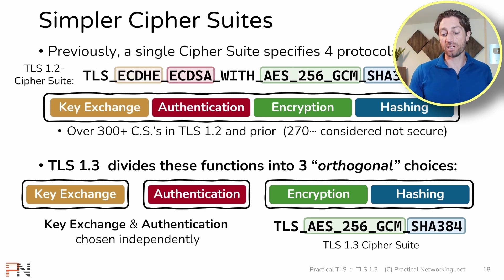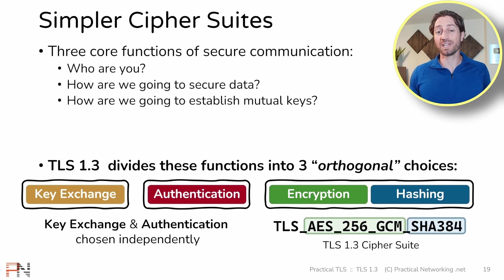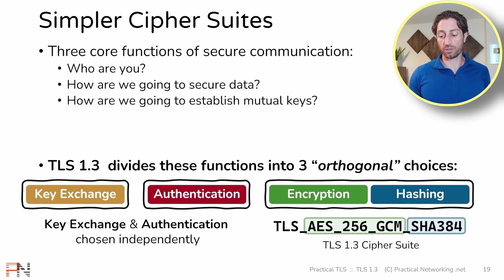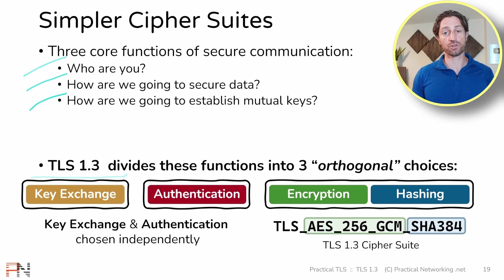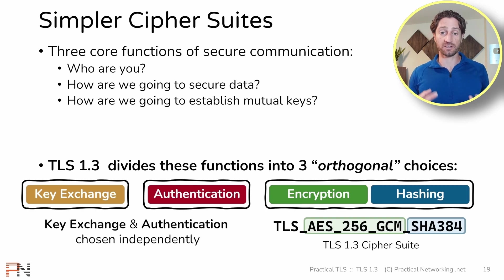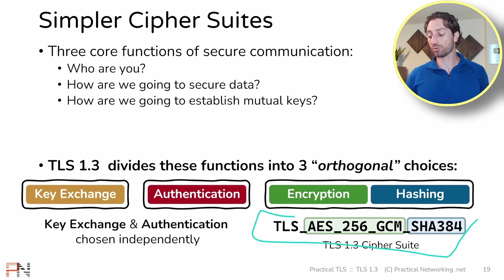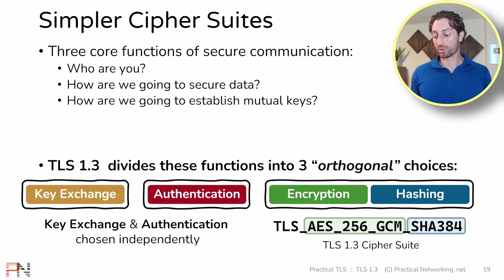One of the other benefits of making these three orthogonal choices is that it breaks down security into the three core concepts of any secure communication protocol. Every secure communication protocol — TLS, IPSec, SSH, and others — really is just a different way of answering these three questions: Who are you? That's authentication. How are we going to secure data? That's symmetric encryption and hashing. And how are we going to establish the mutual secret keys? That's key exchange. With TLS 1.3, the choice of how you answer each of those is completely independent and orthogonal. So the second change is that the cipher suite itself is simplified to only specify two protocols.